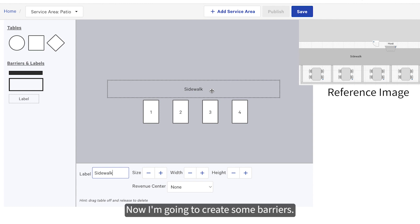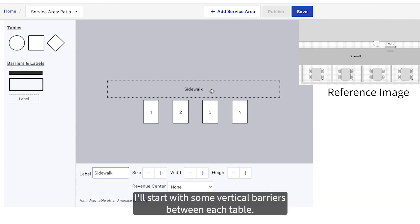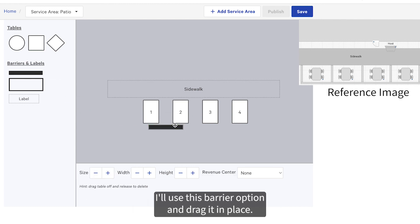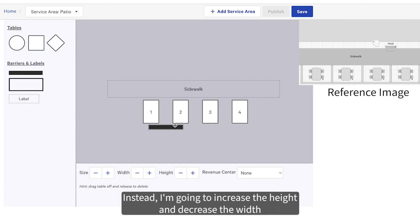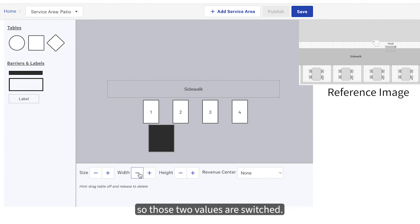Now I'm going to create some barriers. I'll start with some vertical barriers between each table. I'll use this barrier option and drag it in place. Notice that there isn't an option to rotate this barrier. Instead, I'm going to increase the height and decrease the width so those two values are switched. I'll need to do this a few times.